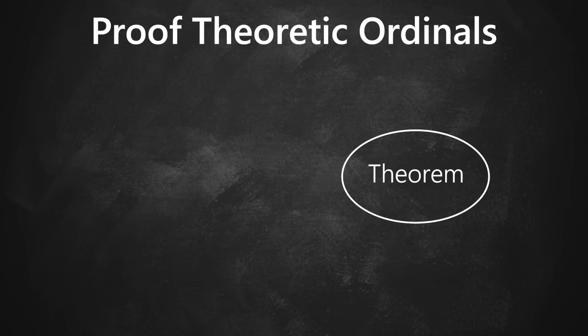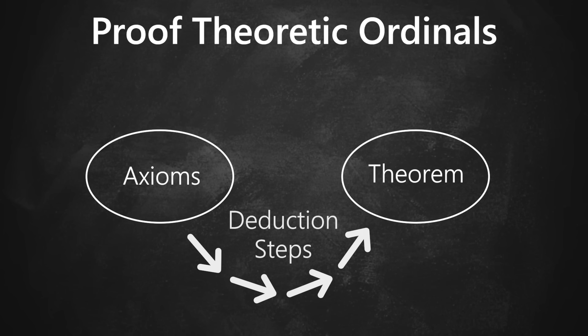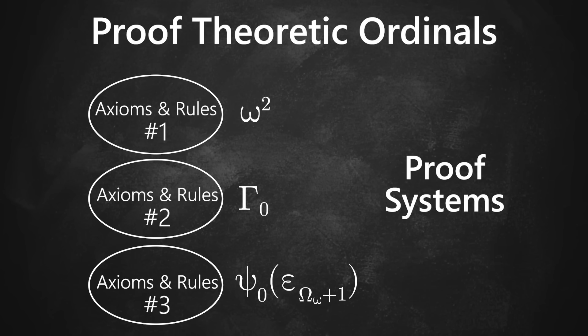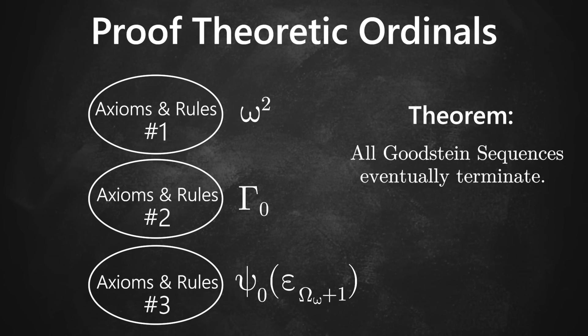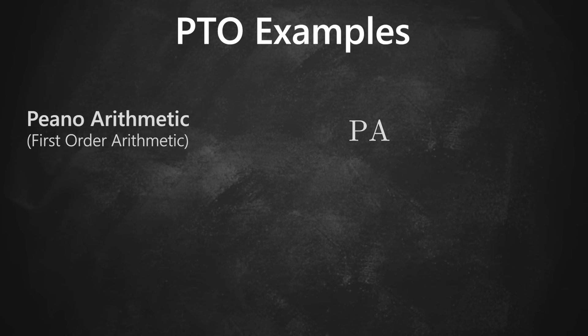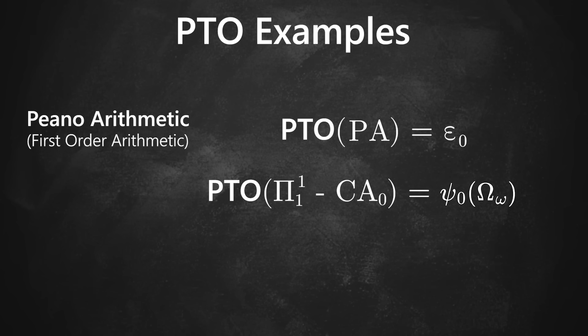So let me explain what proof-theoretic ordinals are. Whenever we prove theorems, we use a system of axioms and rules for deduction. And depending on which axioms we start with, we can get different proof systems. These proof systems each have different strengths, which correspond directly to ordinals. You can think of the proof-theoretic ordinal as the limit for the largest level of recursion you can use to prove statements in that system. So, for example, Peano arithmetic, or first-order arithmetic, has the proof-theoretic ordinal epsilon-0. The Buchholz ordinal happens to be the proof-theoretic ordinal for this system, which is a strong subset of second-order arithmetic.